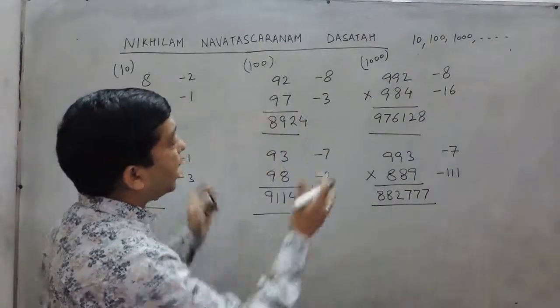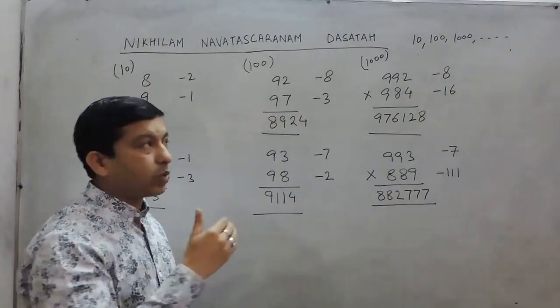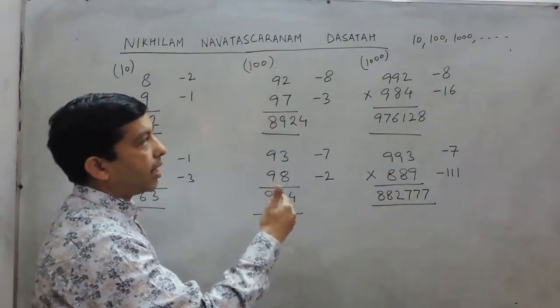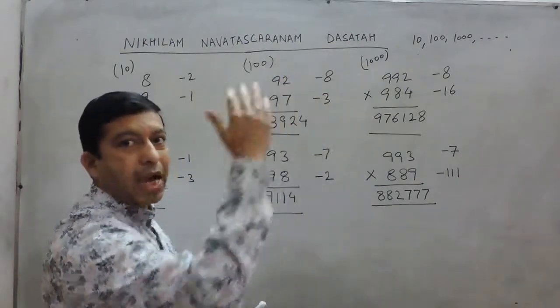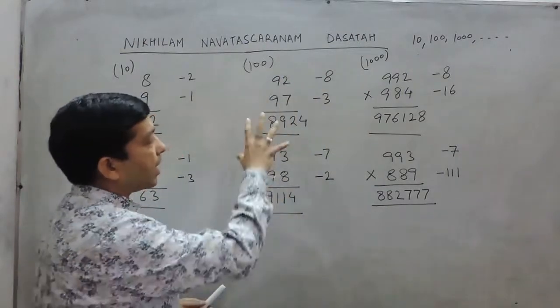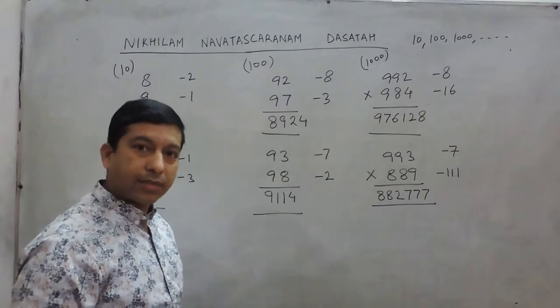So we can multiply all the numbers which are near to 10, 100, 1000, 10,000, and so on. Numbers which are near to these bases can be multiplied by this method. Thank you.